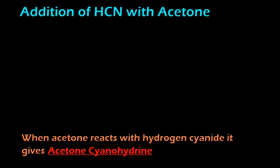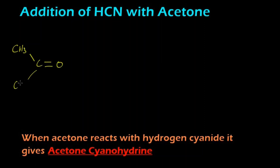In this video we are going to learn the reaction of acetone with hydrogen cyanide. Let's write the structure of acetone first: CH3, C double bond O, CH3. This is acetone. We are going to react it with hydrogen cyanide.